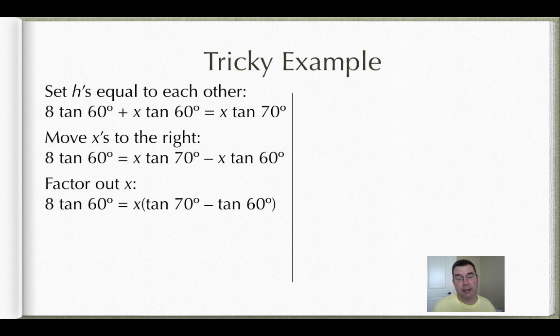Now that's not just the tangent of 10. You can't make things as simple as that. So we actually have to calculate those separately and then subtract them. So x is going to be equal to 8 times the tangent of 60 over the tangent of 70 minus the tangent of 60 degrees. I can type that all into a calculator all at one time and get my answer of 13.646 feet.